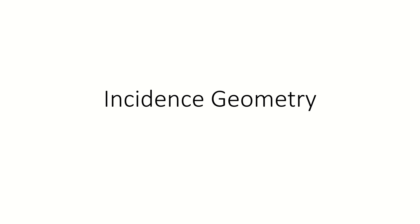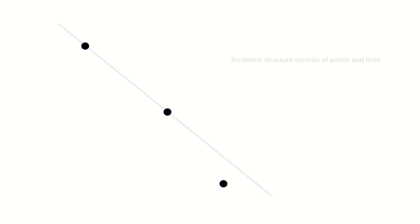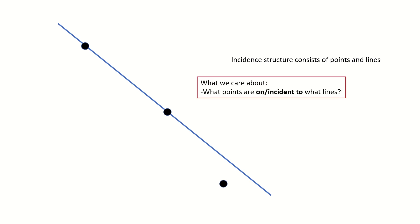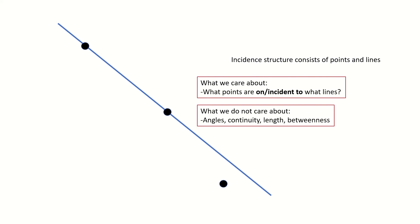Today I'd like to introduce you to incidence geometry. Incidence geometry is the study of incidence structures, which are informally a system of two types of objects — points and lines — and a single type of relationship between those objects: incidence. You can think of incidence geometry as geometry where all we care about is what points are on what lines. Things we don't care about include angles, continuity, length, and even betweenness — we don't make the distinction that some point comes before or after another point on a line, only whether they are incident to that line.